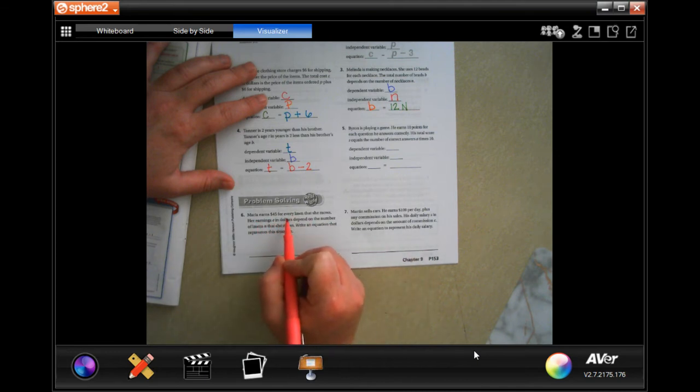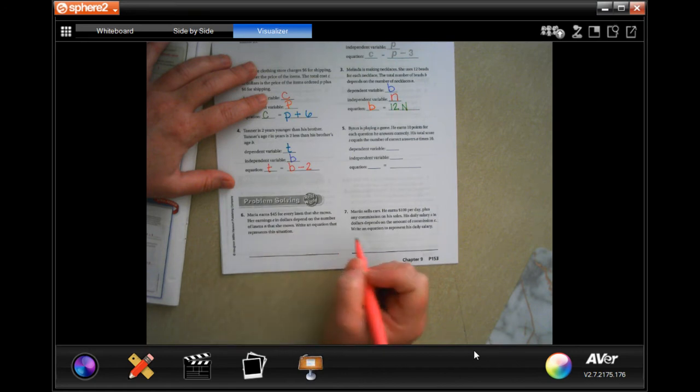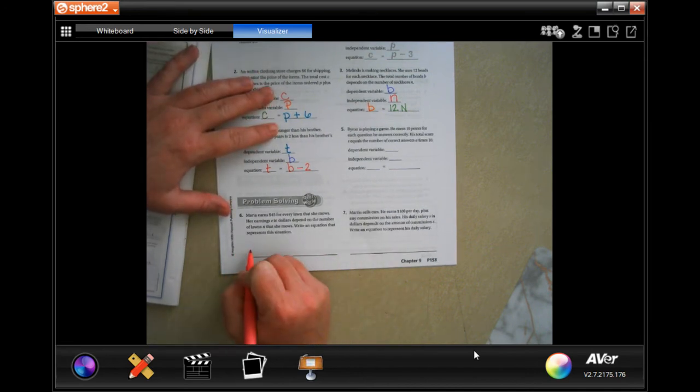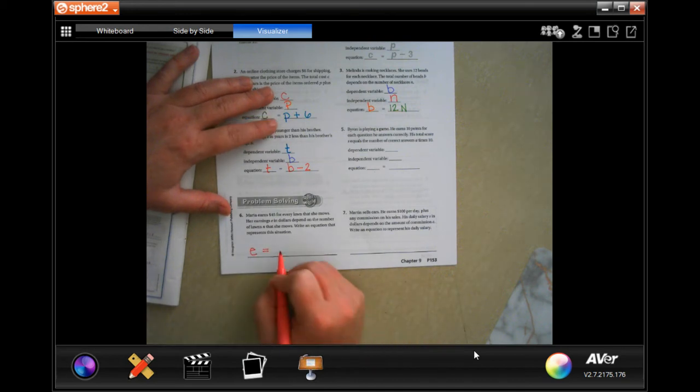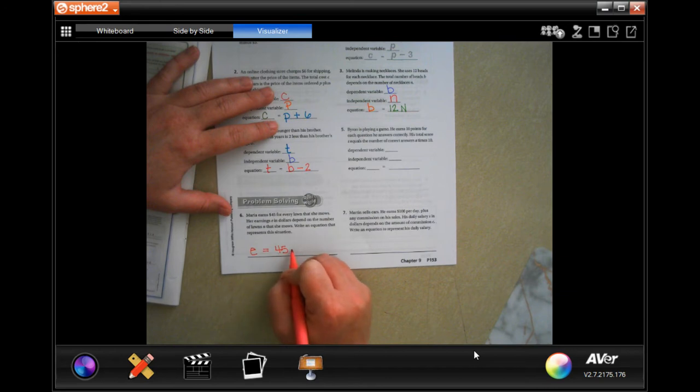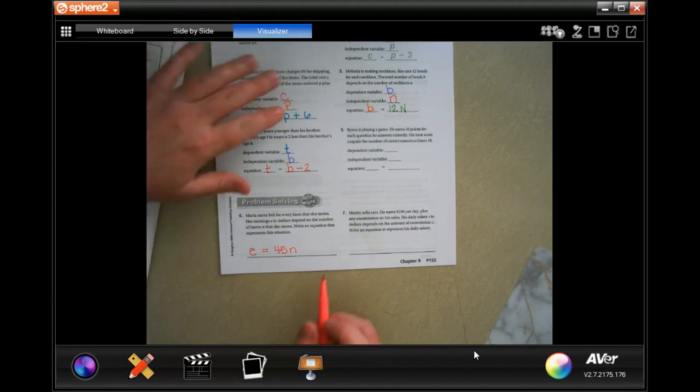Maria earns $45 for every lawn that she mows. Her earnings, E, in dollars depend on the number of lawns, N, that she mows. Write an equation that represents this situation. So her earnings depend on $45 for each lawn that she mows. So $45 times six lawns she mows, times two lawns she mows, times whatever, however many lawns that she mows. That's how much she's going to earn. So that is our equation.